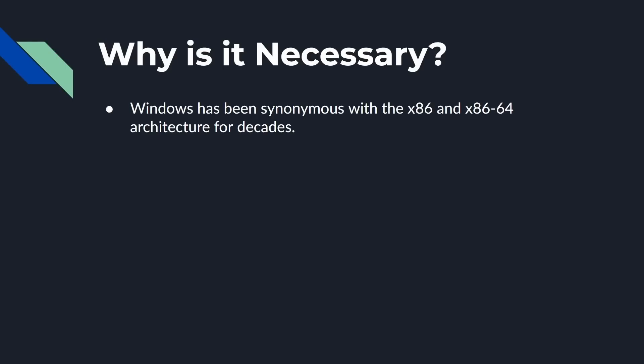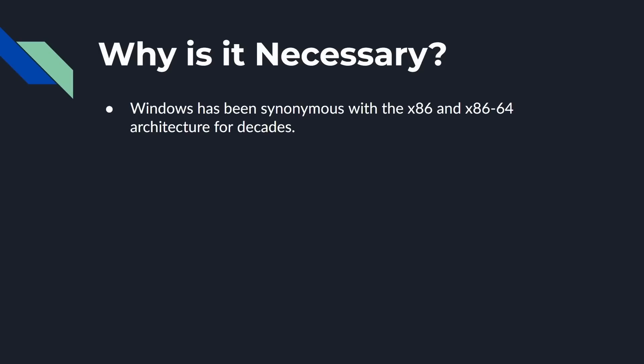Why do we need an emulator? Windows has been synonymous with x86 and x86-64 for decades, and all the software written for a long time compiled by default to that architecture. After several false starts — do you remember the Microsoft Surface RT? — we are now actually entering an era of dual architecture Windows ecosystems: x86-64 and ARM-64, AArch64 as it's technically known. Now when you compile using Visual Studio, which is available for both architectures, it can produce binaries for both.